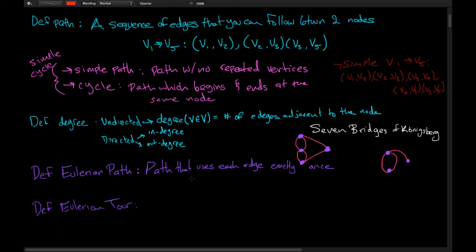We can define an Eulerian path, which is a path that uses each edge exactly once and uses every single edge. Note this is different from a simple path, which uses each vertex at most once. An Eulerian path uses every single edge exactly once. The way I like to think of it: after you cross a bridge, you burn it down, and at the end of your path you should have burned down every single bridge. An Eulerian path is now complete.